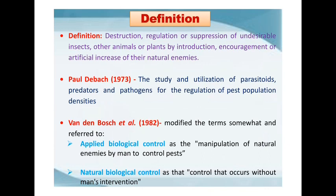Here are some definitions given by scientists. The first one is the destruction, regulation or suppression of undesirable insects, other animals or plants by introduction, encouragement or artificial increase of their natural enemies. Biological control is the encouragement or maintenance of the culture of natural enemies of the pest in our agro-ecosystem, with the help of which we can manage or control different pest populations in our field.